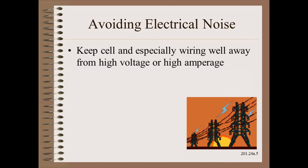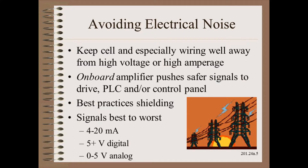Electrical noise is ever present in our plants and is one of the bigger risks for load cell problems. We don't want that noise to ever talk to our load cells. We start with good design practices that avoid the problem in the first place by keeping the cell and especially wiring well away from high voltage or high amperage wiring such as motors, static bars, corona treaters, and other devices. The next step would be to use onboard amplifiers that push more robust signals through this risky space. The signals from best to worst include 4 to 20 milliamps, which is nearly bulletproof; digital signals, which are usually okay; and 0 to 5 volt analog signals, which are getting risky. Millivolt signals from remote amplifiers are, in my mind, never mill duty or safe enough to run any distance.